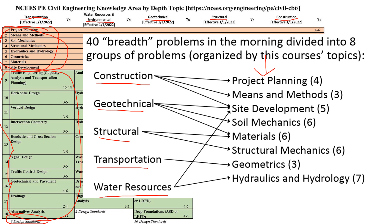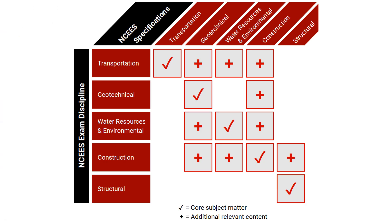Starting April 2024, we're moving to depth only. When you sign up to take the civil engineering PE exam, you still choose one of those five disciplines, but now you'll see much more depth-specific information. There's much more emphasis on professional practice and using those design standards, reference handbooks, and reference manuals that you'd use in a professional career.